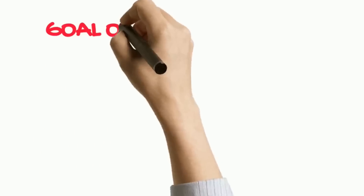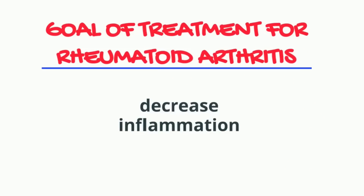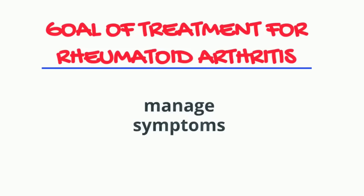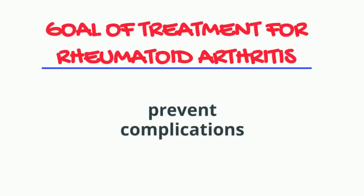The goal of treatment for rheumatoid arthritis is to decrease your inflammation or reduce it to the lowest level possible, to manage your symptoms, to prevent joint and organ damage, to improve your function and general well-being, and to prevent the complications brought about by rheumatoid arthritis. Since rheumatoid arthritis is an autoimmune dysfunction, studies have not really shown the exact ways to prevent it. However, if you think you are suffering from rheumatoid arthritis, there are things that you can do at home to help manage your symptoms. Take a well-balanced and nutritious diet, which would help you maintain an ideal and healthy weight.